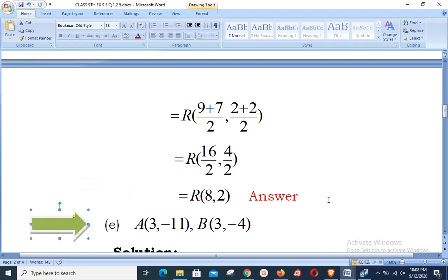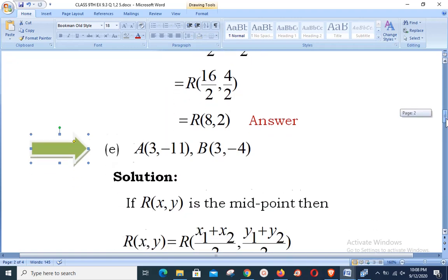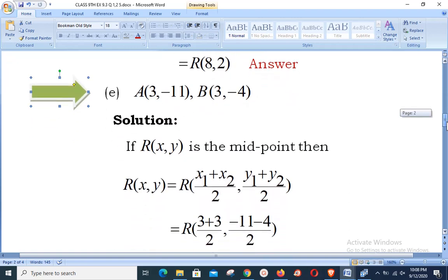The next part, part E, has question values A(3,-11) and B(3,-4). Starting our solution: If R(x,y) is the midpoint, then using the midpoint formula, R(x,y) = R((x₁+x₂)/2, (y₁+y₂)/2).